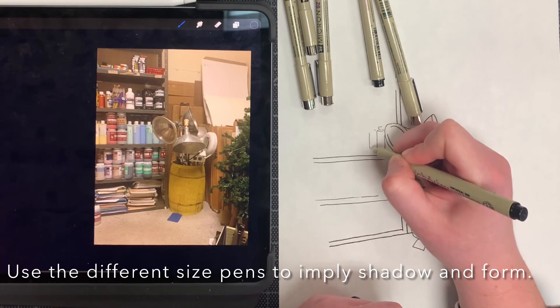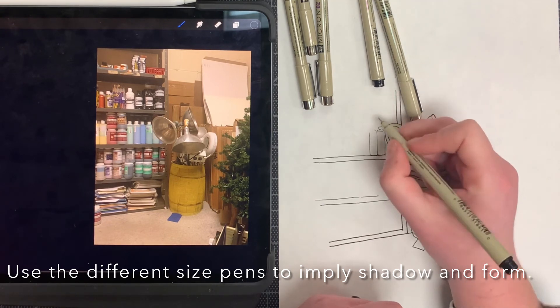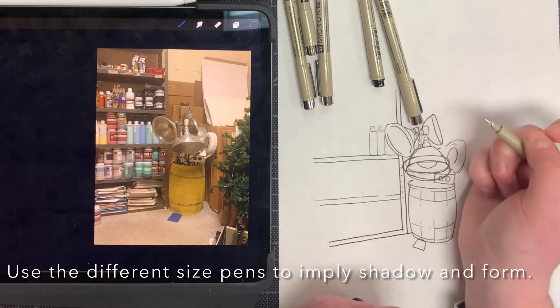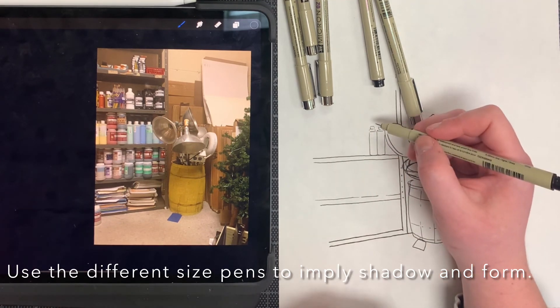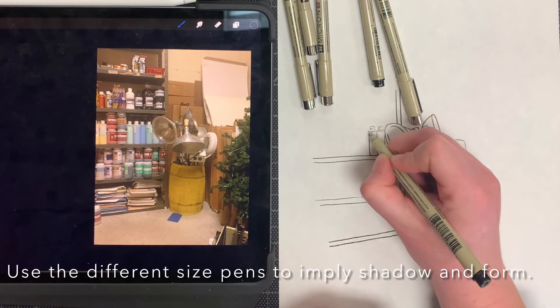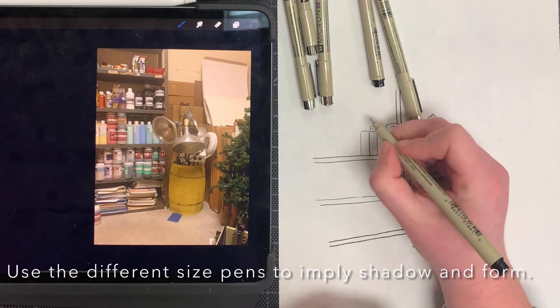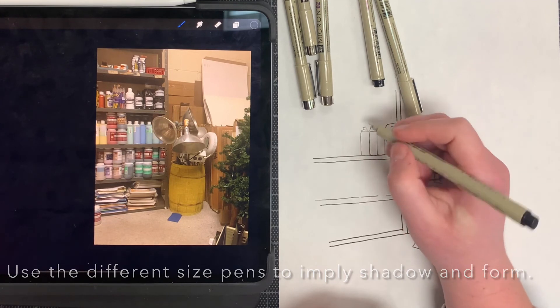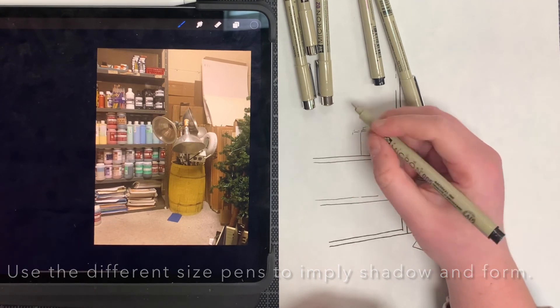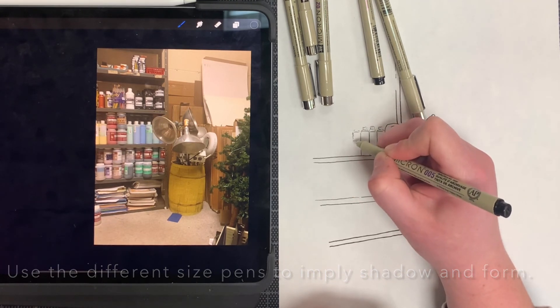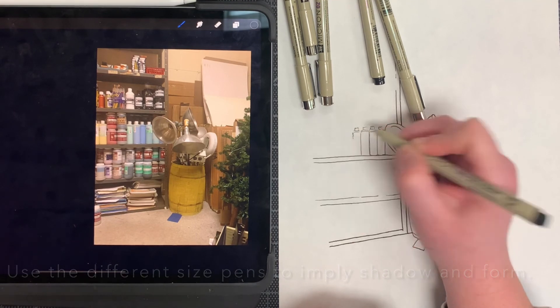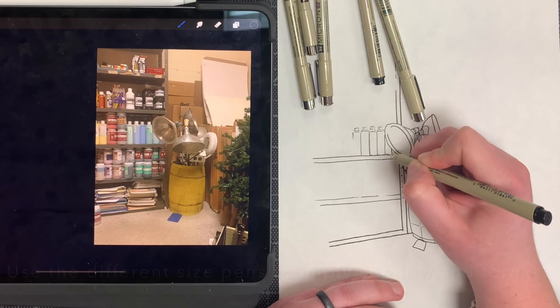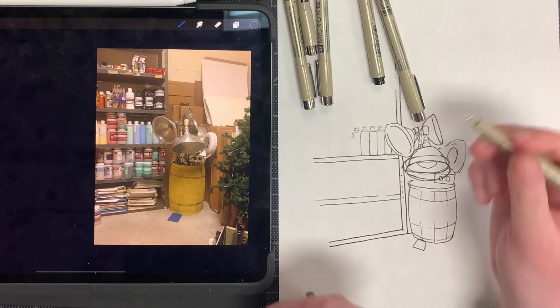This change of line width is beginning to show line weight. Line weight refers to the thickness or thinness of a line. And line weight helps us imply shadow and form in our drawing without needing to shade anything. So once again, I don't want you to shade this drawing. I only want you to draw the outline of each object. But I want you to begin implying shadow and form by maybe breaking up your line or using different size pens to imply lighter areas and heavier areas.